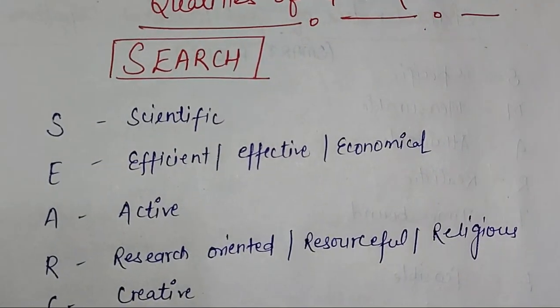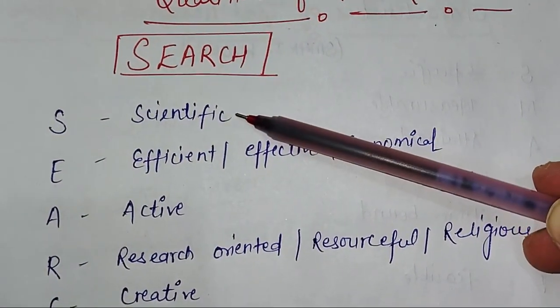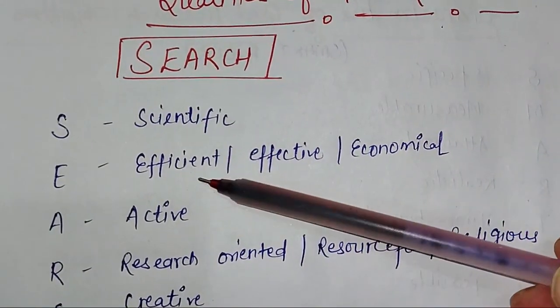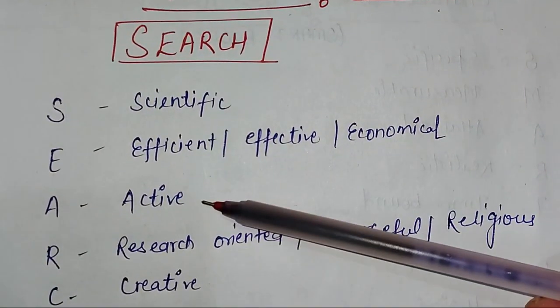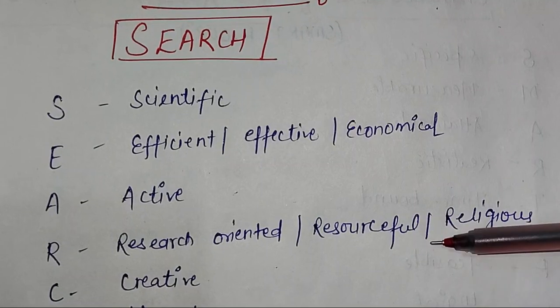the qualities by the mnemonic SEARCH. S stands for scientific - the researcher should have scientific knowledge. E is efficient, effective, and economical. A is active to perform the research. R is research-oriented, resourceful,